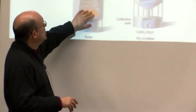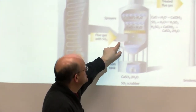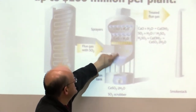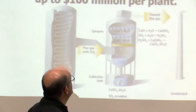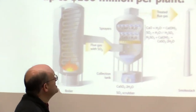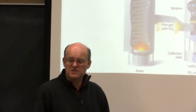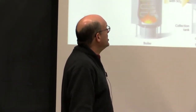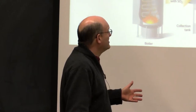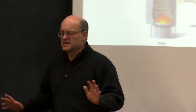You burn the coal, it goes up, and you scrub it — basically you run it through compounds like CaO (calcium oxide) and water, and it's really expensive.